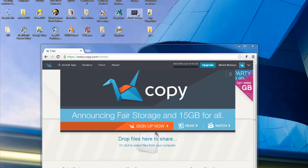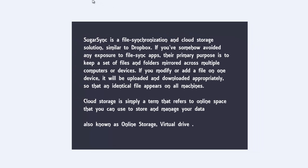Before I show you how to use their service, let me tell you what exactly is meant by cloud storage for people who are still a little confused. SugarSync, Dropbox or even Google Drive are all file synchronization and cloud storage solutions. Their primary purpose is to keep a set of files and folders mirrored across multiple computers or devices. If you modify or add a file on one device it will be uploaded and downloaded appropriately so that an identical file appears on all machines or devices like your smartphone or Android. Cloud storage is simply a term that refers to an online space, just like a remote server, that you can use to store and manage your data, collaborate and share among your friends and colleagues. It's also known as online storage or virtual drive.